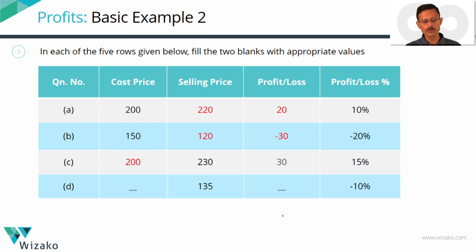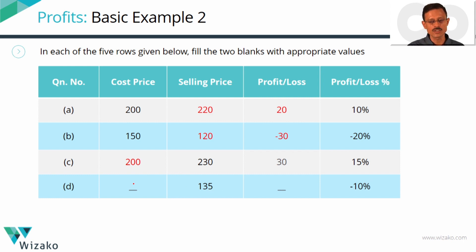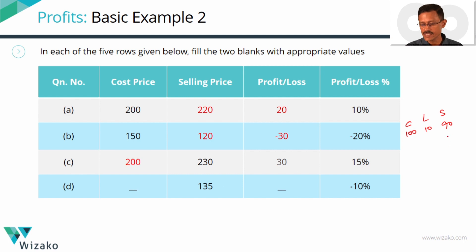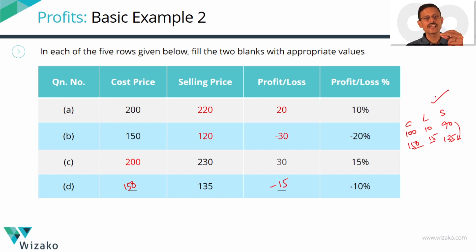Row 4: loss is 10% and selling price is 135 (cost price not given). Using proportions — assume cost = 100, loss = 10, selling price = 90. The actual selling price of 135 is 1.5 times 90. So cost = 1.5 × 100 = 150 and loss = 1.5 × 10 = 15. The merchant bought at 150, lost 10%, lost 15, and sold at 135. Proportions give the answer in a jiffy.